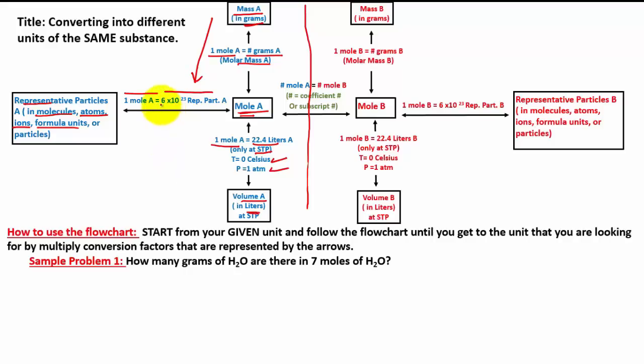This number, 6 times 10 to the 23rd representative particles, is not a random number. It is a number that is determined by using carbon-12 and exactly 12 grams of carbon-12. And they figured out that in 12 grams of carbon-12...